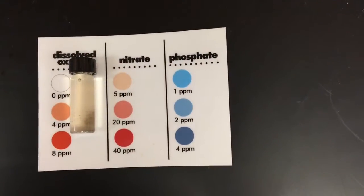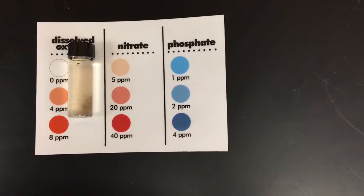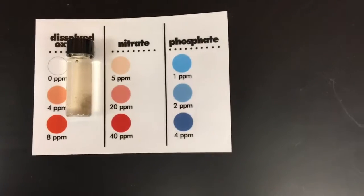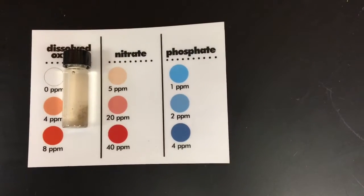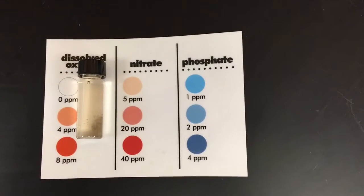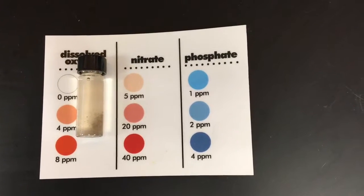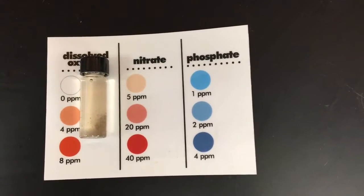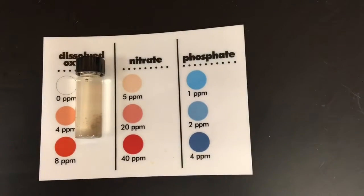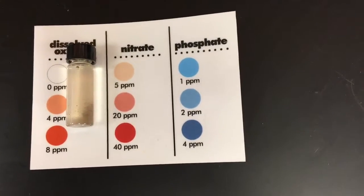Next we're going to talk about dissolved oxygen. Dissolved oxygen is important to an aquatic ecosystem because all aquatic animals like fish need oxygen to survive. Low levels of dissolved oxygen make it hard for these animals to breathe, which can lead to sickness and even death. Dissolved oxygen is measured in parts per million, or ppm — so if you have 15 ppm, that means out of every one million molecules, 15 would be whatever it is you're looking at.